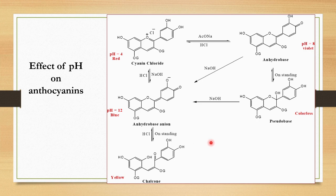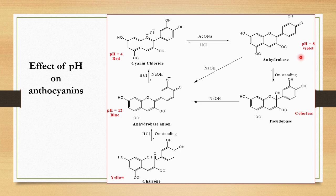Now let us see the effect of pH on anthocyanins — why they show different colorations at different pH. At pH 4, cyanidine chloride is red in color. When we add sodium acetate and the pH becomes nearly neutral at around pH 8, it becomes violet in color. You can see the change in position of double bonds and the change in conjugation. This is the anhydrobase. After some time on standing, this compound converts into the pseudobase, which is a colorless compound. At basic pH of around 12, cyanidine chloride appears blue in color.